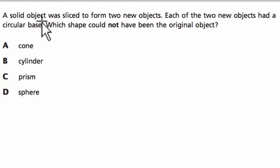Alright, let's read the problem. It says that a solid object was sliced to form two new objects, and each of the two new objects had a circular base. Which shape could not have been the original object?